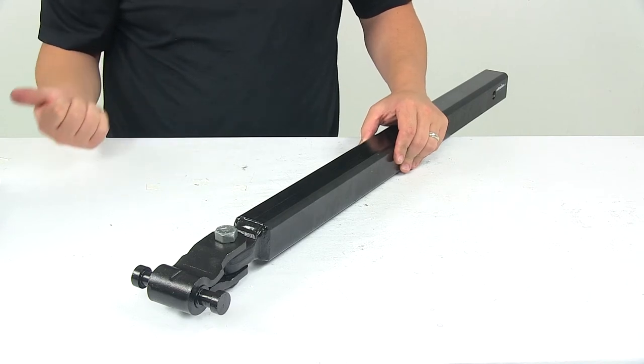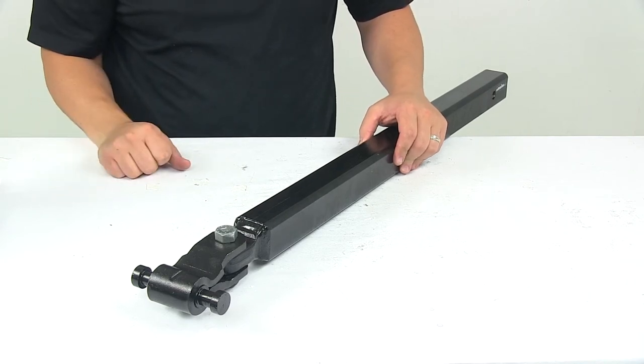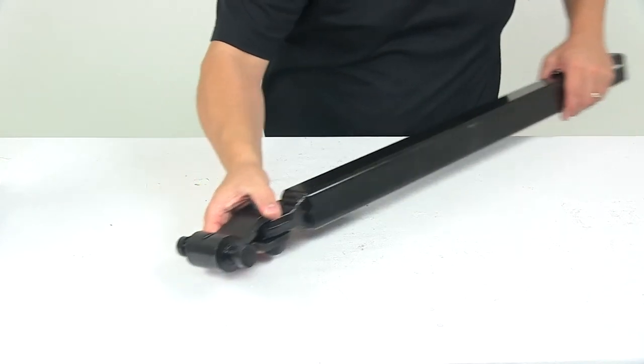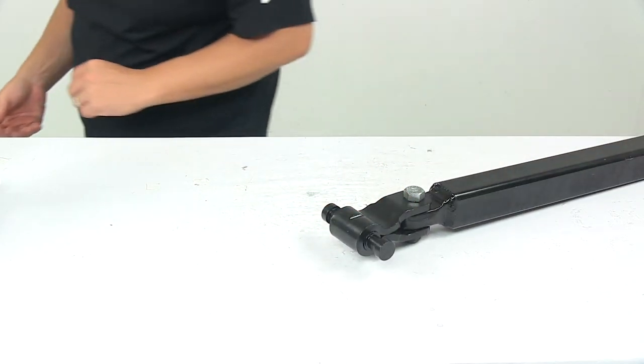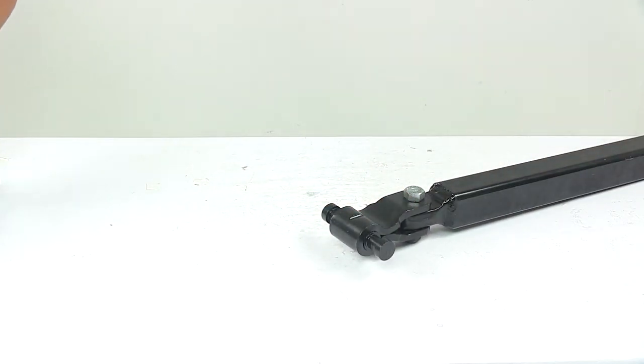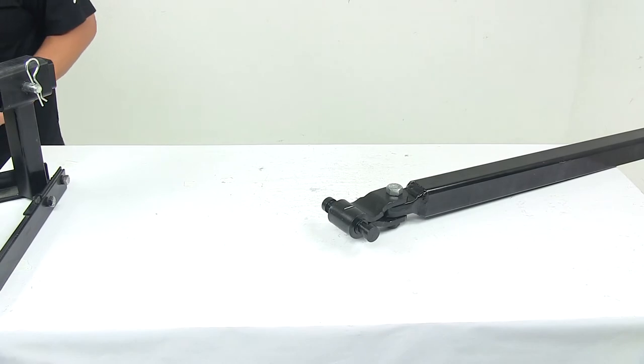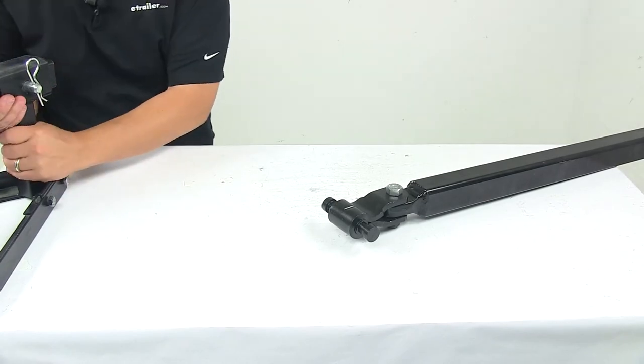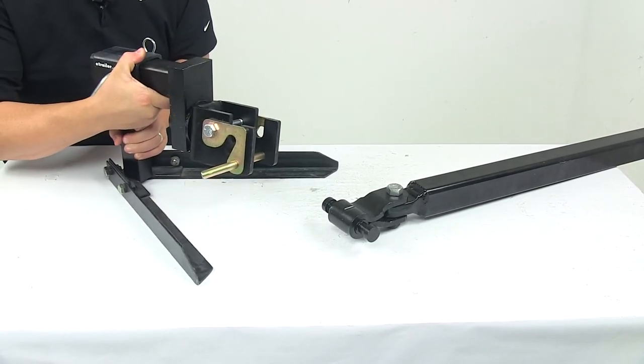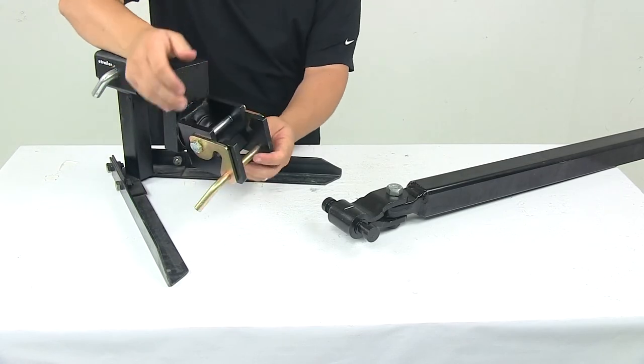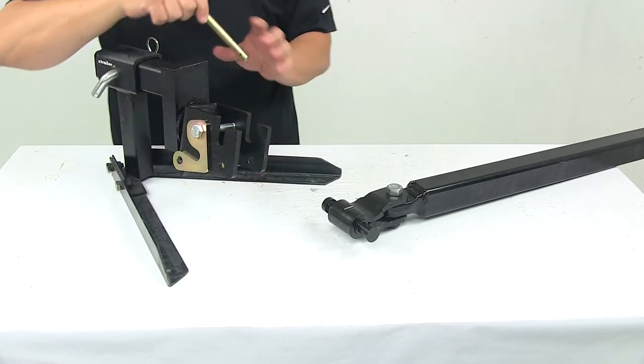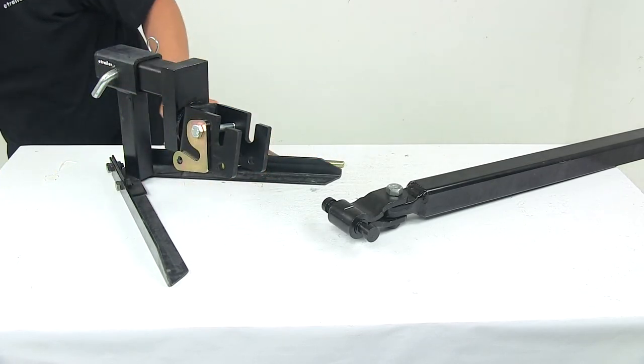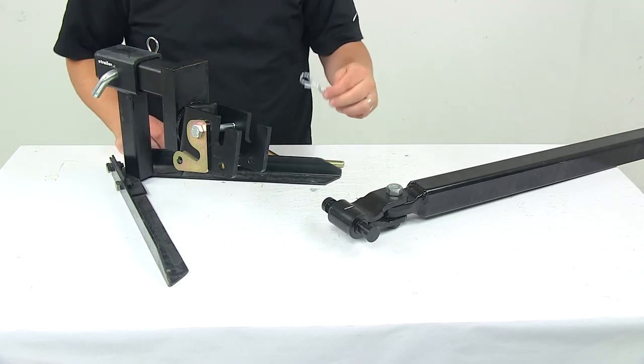I do have a vehicle side coupler available so I want to show you how the connection is made. So this is our vehicle side coupler. You'll need to pull the pin. It also comes with a clip that goes on the other side of that pin.